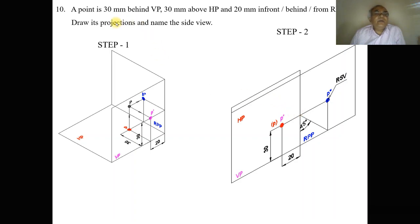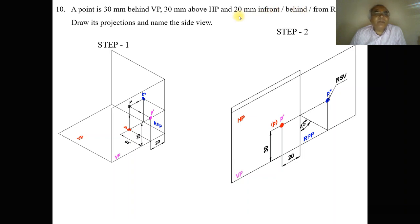In this video we will take up one more problem on the second quadrant. A point is 30 mm behind VP, 30 mm above HP, and 20 mm from RPP. Draw its projections and name the side view.